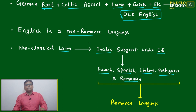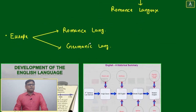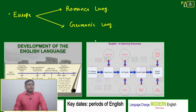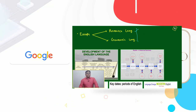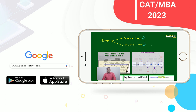English is not among these five, which is why we say English is a non-Romance language. Europe is mainly dominated by two language families: Romance languages and Germanic languages. Germanic languages came to India, while Romance languages — French, Spanish, and Portuguese — are the dominant ones in Europe.